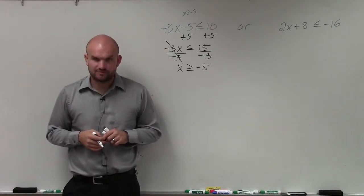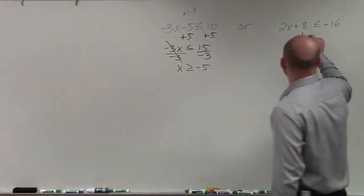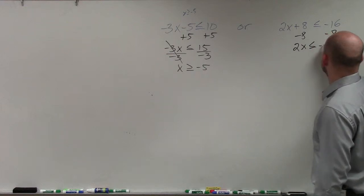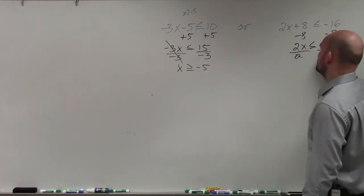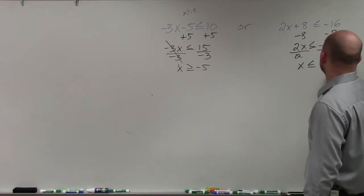Jacob, make sure you flip that sign. It's going to happen. I'm telling you. Over here, we go ahead and solve. So I subtract 8. Subtract 8. 2x is less than or equal to negative 24. Divide by 2. Divide by 2. x is less than or equal to negative 12.